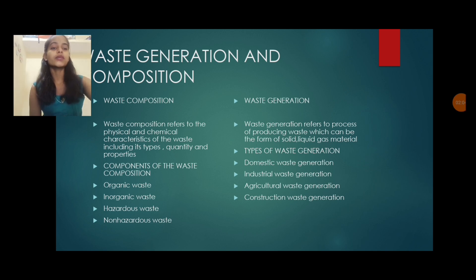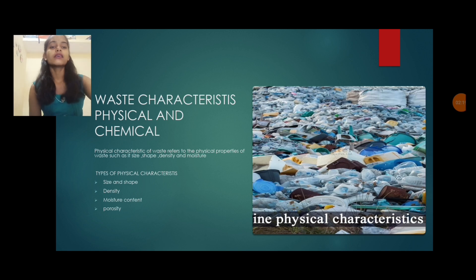Waste generation refers to the process of producing waste, which can be in the form of solid, liquid, or gas. Types of waste generation include: domestic waste generation, industrial waste generation, agricultural waste generation, and construction waste generation. Physical characteristics of waste refer to the physical properties of waste such as its size, shape, density, and moisture content.